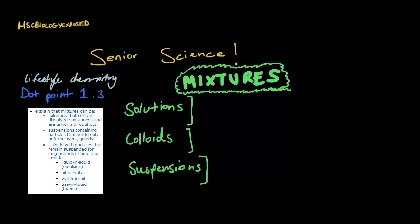This stop point basically asks us to explain the mixtures that can be solutions, suspensions and colloids. That's the three things it asks for and then colloids has subsections. That's the main part of this stop point, we just need to know what solutions are, suspensions are and what colloids are. So that's what I'm going to be defining today and that's what I'm going to try and describe to you.